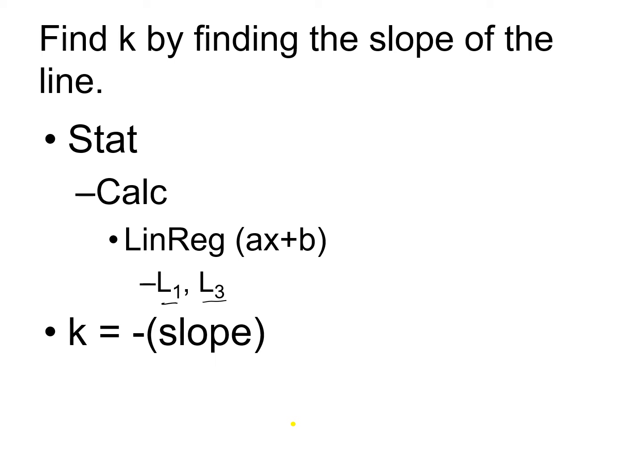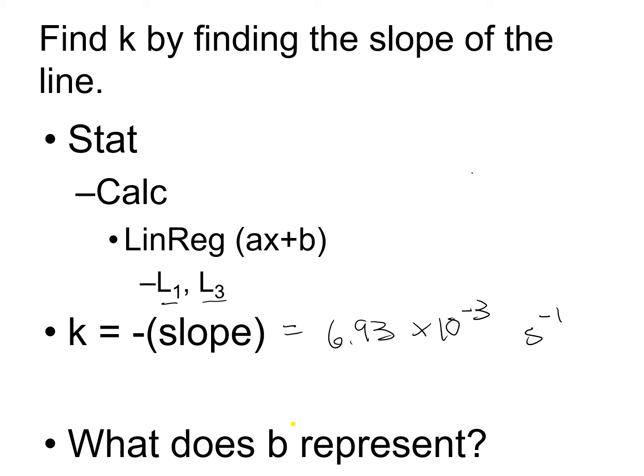I have a value of 6.9 times 10 to the minus 3, and I know it's per second for a first-order reaction. Now, what does B represent? B represents the initial concentration of N2O5, so we put that little knot symbol for initial.